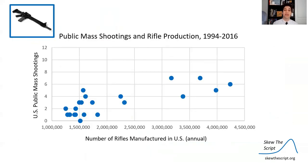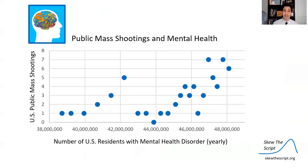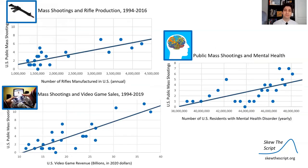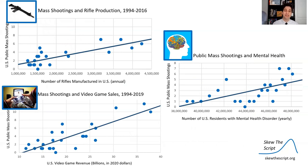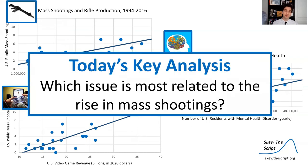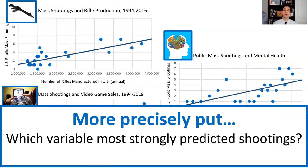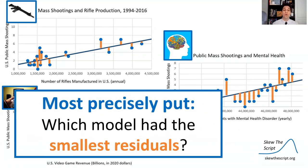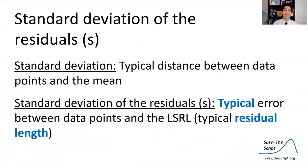Here are the correlations we found: public mass shootings with rifle production, public mass shootings with mental health cases, and public mass shootings with video game sales — each data point representing a different year between 1994 and 2019. We can fit a least squares regression line to each of these, but the question becomes: which issue, given these models, is most related to the rise in mass shootings? More precisely, which variable most strongly predicted shootings — in other words, which model has the smallest residuals on average?